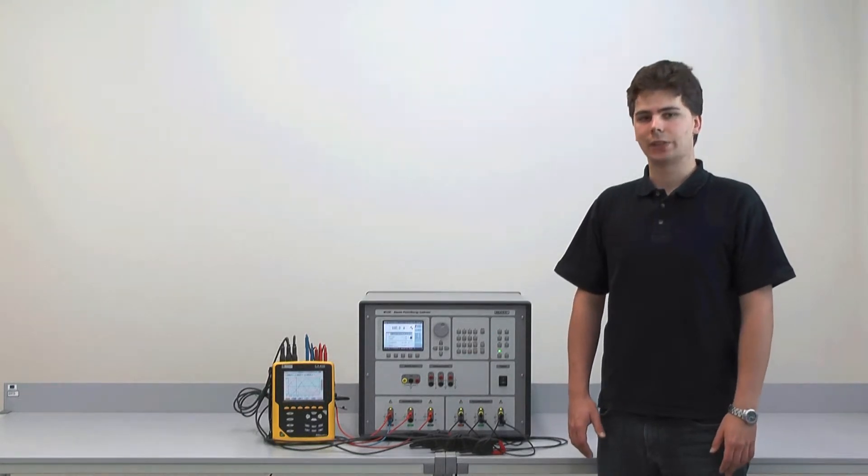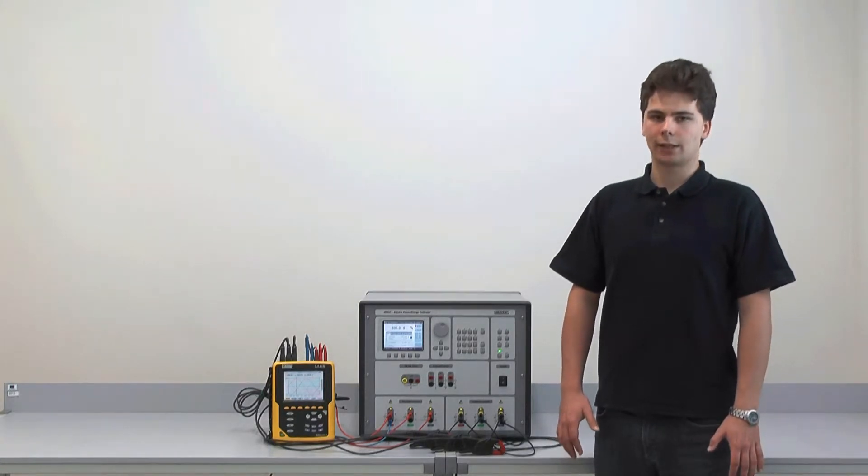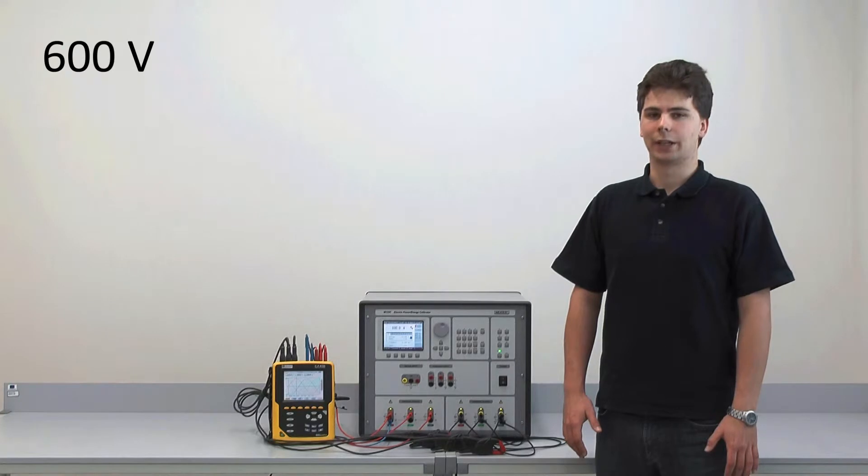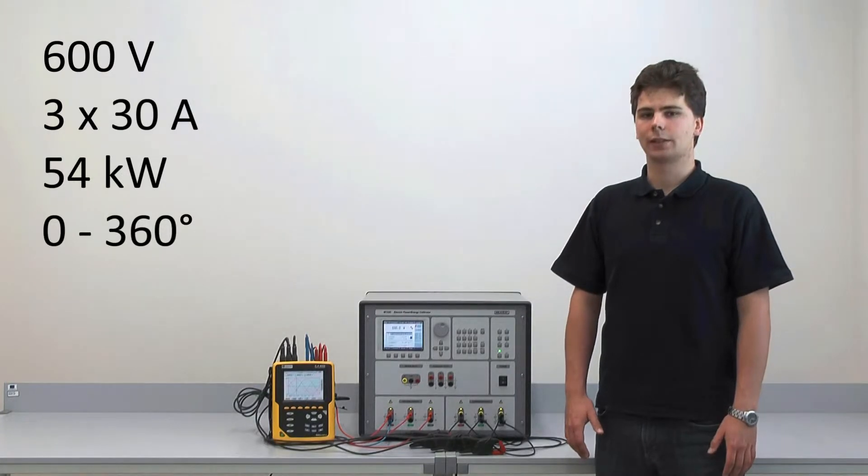The M133C has ordinary output ranges of voltage up to 600 volts, current up to 90 amps, power up to 54 kilowatts, and available phase shift 0 to 360 degrees.